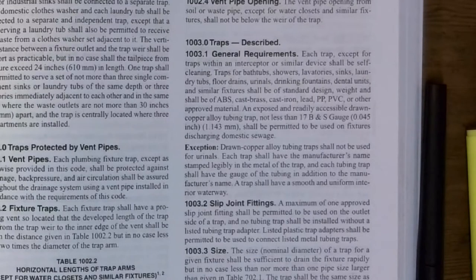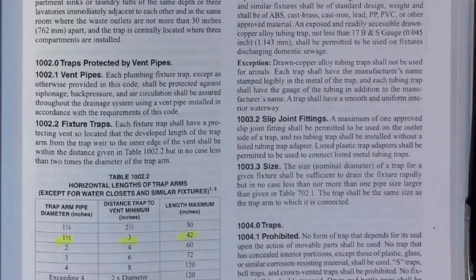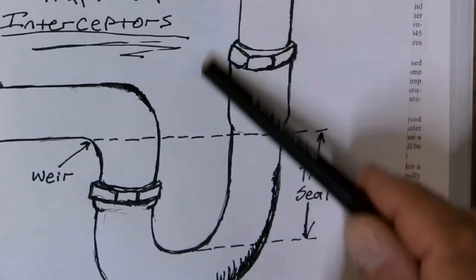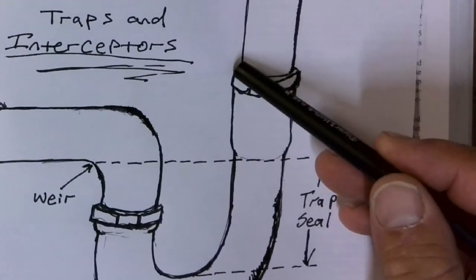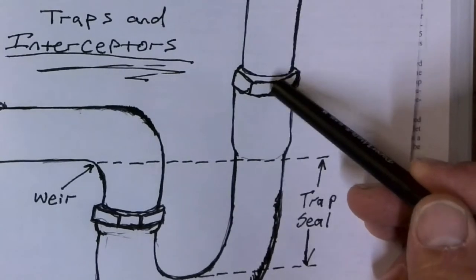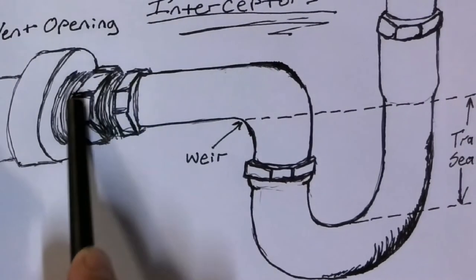Each trap shall have the manufacturer's name stamped legibly in the metal, and each tubing trap shall have the gauge of the tubing in addition to the manufacturer's name. A trap shall have a smooth and uniform interior waterway. Regarding slip joint fittings: a maximum of one approved slip joint fitting shall be permitted on the outlet side of a trap, and no tubing trap shall be installed without a listed tubing trap adapter. Listed plastic trap adapters shall be permitted to connect listed metal tubing traps. The assembly where tubing comes through a cup and a nut with a rubber ferrule cinches it down — that is a slip joint.